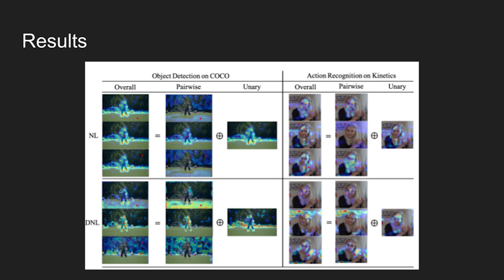Here is a visualization of attention maps on COCO object detection and Kinetics action recognition dataset. The query points are marked in red. While pairwise term in non-local block is almost hindered by the unary term, the pairwise term in disentangled non-local block shows clear within region meaning and appears significant in the final overall attention maps. The unary term in disentangled non-local block also shows more focus to salient regions than the one in the non-local block.